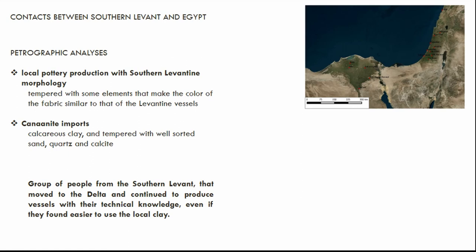Five samples proved to be Canaanite imports, being made with calcareous clay and tempered with well-sorted sand, quartz, and calcite. The presence of crushed limestone and calcite as temper in Nile clay is also attested at Minshat and Heliopolis. The change in the way of production of some specific jars should be interpreted as reflecting particular needs. This evidence suggests the presence of a group of so-called immigrants from the southern Levant that moved to the Delta and continued to produce vessels, particularly jars, with their technical knowledge, even if they found it easier to use the local clay.